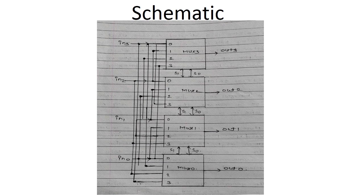There are 4 input lines: IN3, IN2, IN1, IN0, and they are being connected across the 0, 1, 2, 3 input lines of the multiplexers. So based on whatever operation is performed, output O3 will be connected with either IN3, IN2, IN1, or IN0.